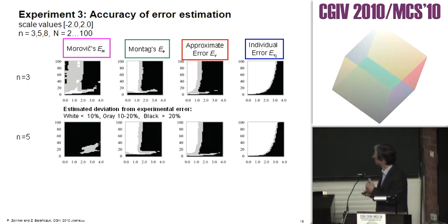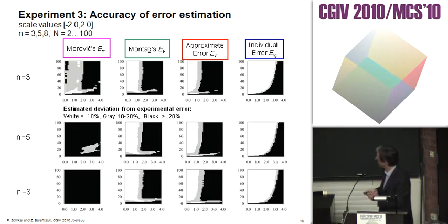For n equals 5 or 8, we see that the first formula doesn't fit anymore. Mosteller's formula and the approximate error are quite similar, and they have a limit up to a scale value difference of about 1. For the individual error, if you have a study with large differences in scale values, it's much more accurate, especially if you go to high numbers of observations.